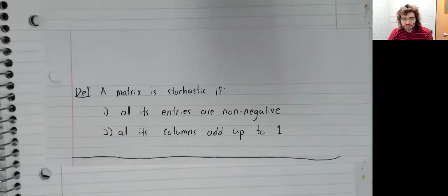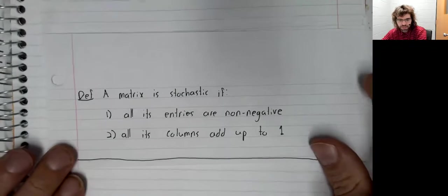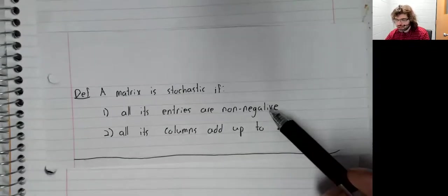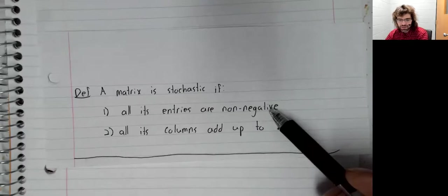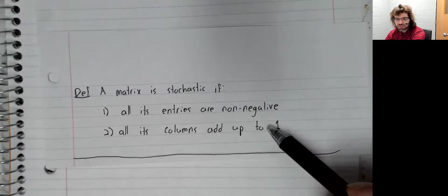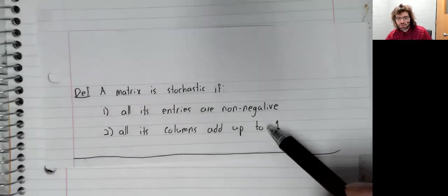Definition: A matrix is said to be stochastic if first, all of its entries are non-negative, and second, all of its columns add up to one.